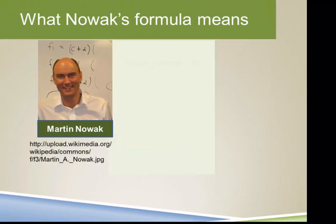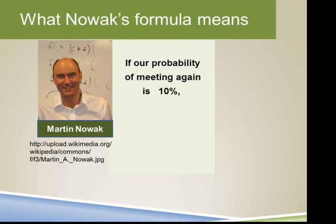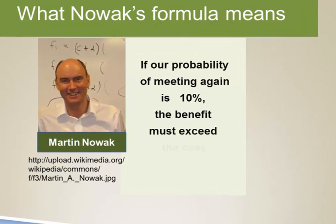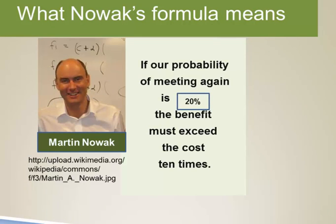We're talking about the cost to the altruistic donor and the benefit to the recipient of that altruistic act. If our probability of meeting again is 10%, then the benefit has to be 10 times the cost. If we raise the probability of meeting again to 20%, then the benefit has to be only five times the cost. And it would appear that as the probability of meeting again goes up, the cost and benefits can get more equal, approaching equality more and more closely. If the probability of meeting again is raised to 50%, then the benefit only needs to exceed the cost by a little more than two times. So as we get more and more certain that we'll meet again, reciprocity presumably becomes more and more possible.